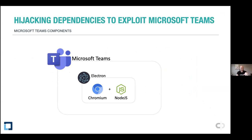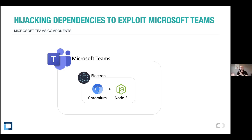Let's talk about the dependency hijacking exploit in Microsoft Teams. Microsoft Teams is actually an Electron app — Electron has a web renderer built on Chromium and is built with Node.js under the hood. You're basically writing a web app but with access to Node, which gives you system access — read files, write files — things not normally available on the web. It packages it all into a single executable.